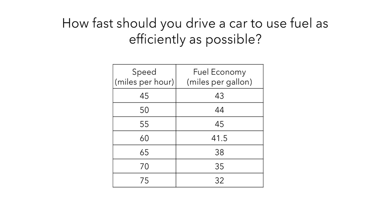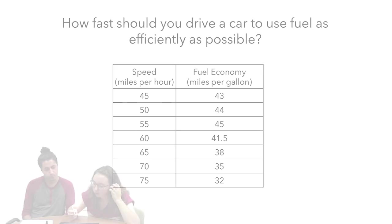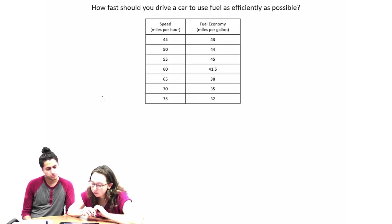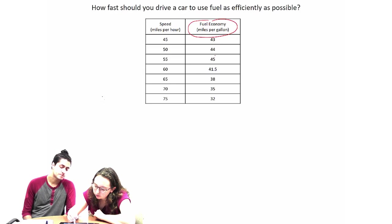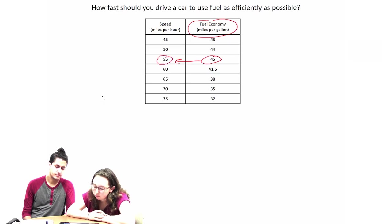As they work, consider the obstacles they encounter, and think about how you might solve the problem. Just looking at the table, we'd want the highest value in this column, which with the data we have is this 45, which would correspond to 55 miles per hour.